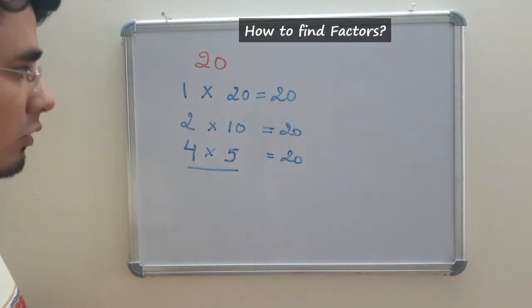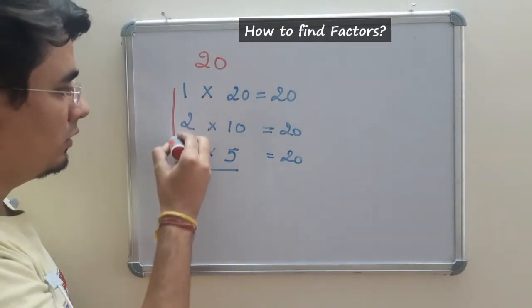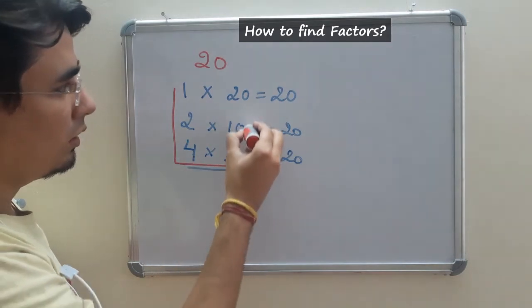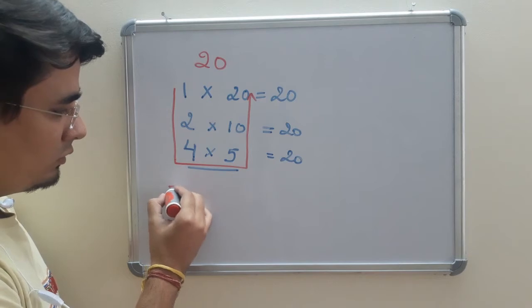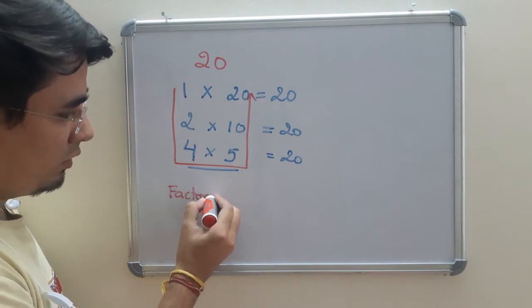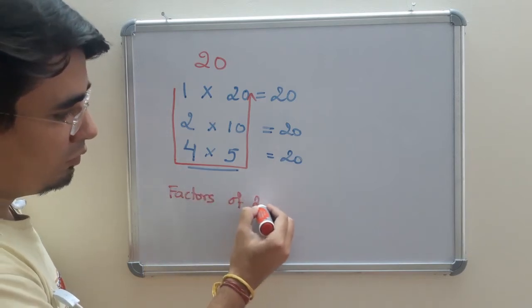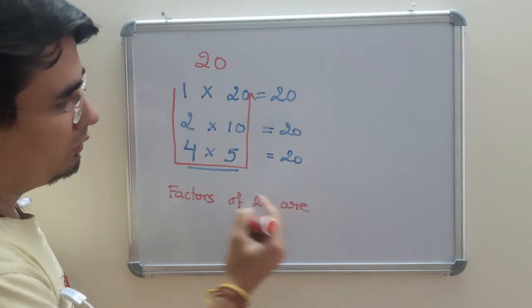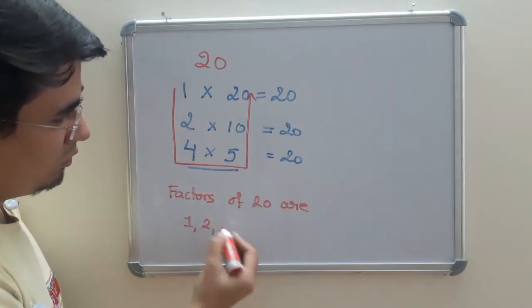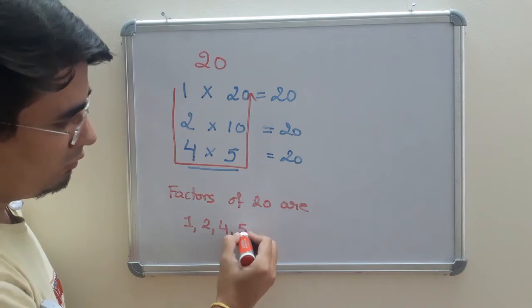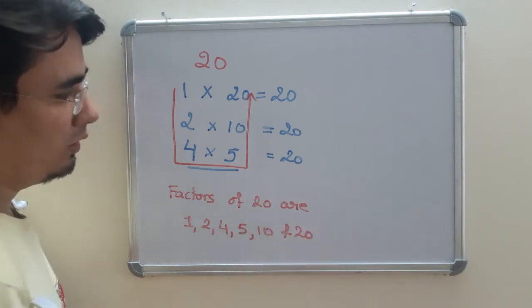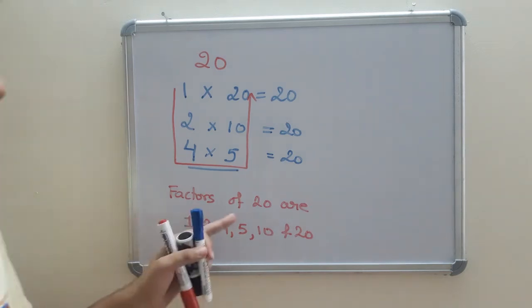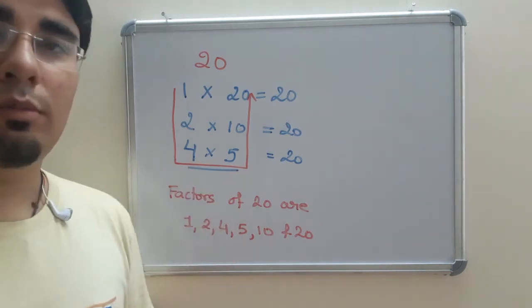Now, if I look this way, factors of 20 are, if you can see 1, 2, 4, 5, 10, and 20. So you can find the factors of any given number like this.